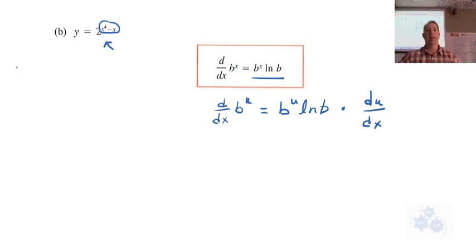So we're going to do everything the same here as it was just x. So the derivative of this, here we go, is 2 to the x to the 4 minus x, the same thing. Let's just put this down.